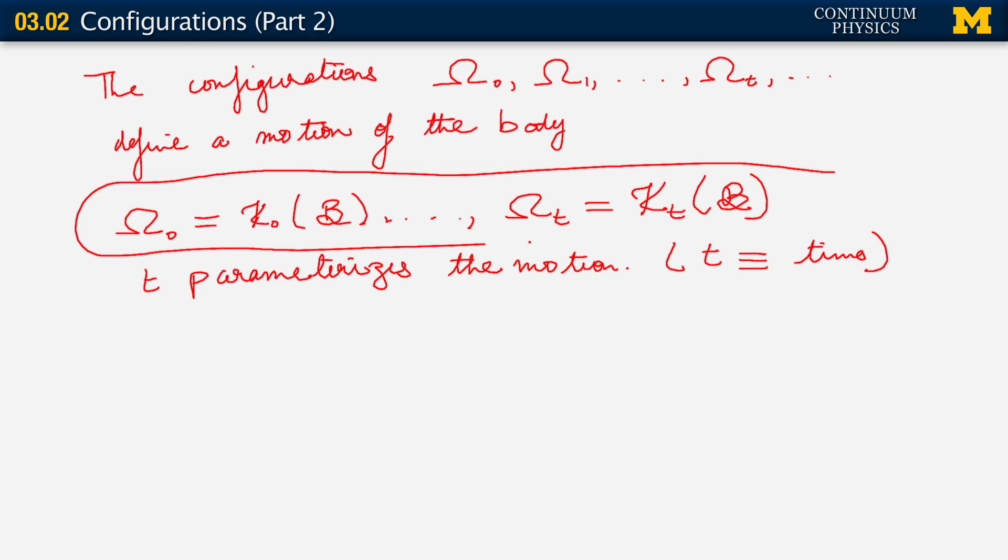Now, so this is how we describe configurations and therefore motions of the body. If you stare at this line, there is something a little unsatisfactory about it. Think about what may not be terribly satisfactory. We have these motions represented through maps, every time mapping the body B to a different configuration. What is not so satisfactory is that we always need to go back to this body. That's the only way we have of writing out these configurations as I've described here. We need something better.